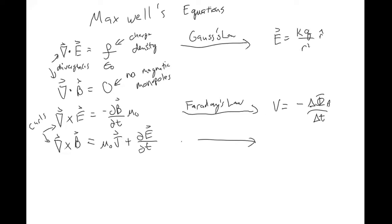The last equation — the first part of it is Ampere's Law, which governs the magnetic field for a straight wire, and we've seen that written out. So we have been dealing with these equations, but just in very specific instances: the electric field for a point charge, the magnetic field for a straight wire, or the voltage from a changing magnetic flux. Maxwell's equations are governing all of the electricity and magnetism stuff we've done so far.